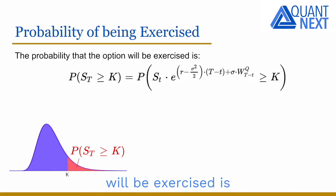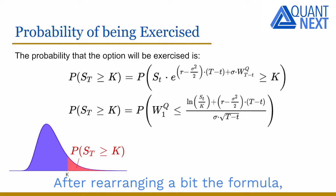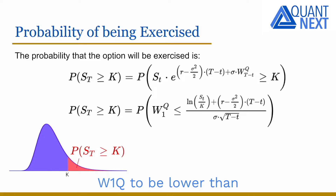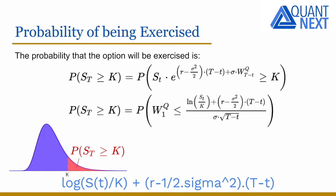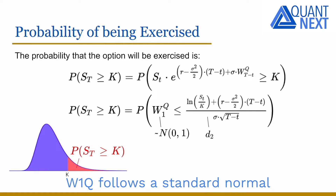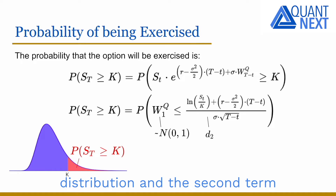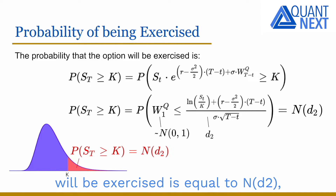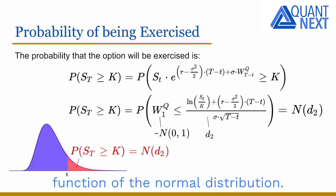The probability that the option will be exercised is the probability of having ST higher than K at maturity. After rearranging the formula, it is equal to the probability of W1Q being lower than the log of ST over K plus R minus half the square of sigma, times capital T minus t, all divided by sigma times the square root of capital T minus t. W1Q follows a standard normal distribution, and this second term is nothing else than D2 in the Black-Scholes formula. So the probability that the option will be exercised is equal to N of D2, with N the cumulative distribution function of a normal distribution.